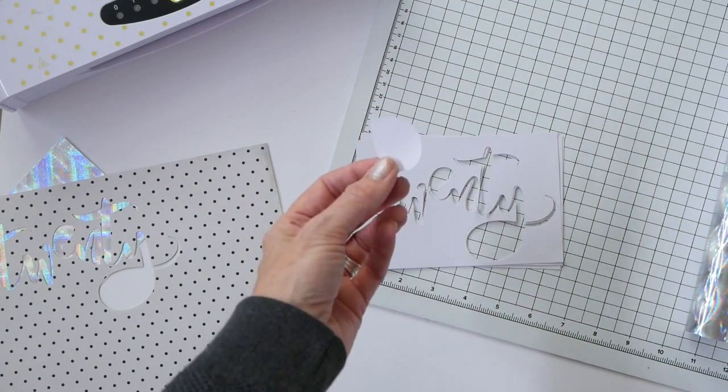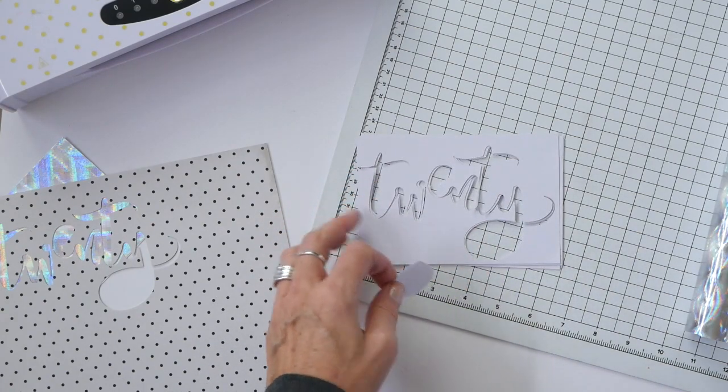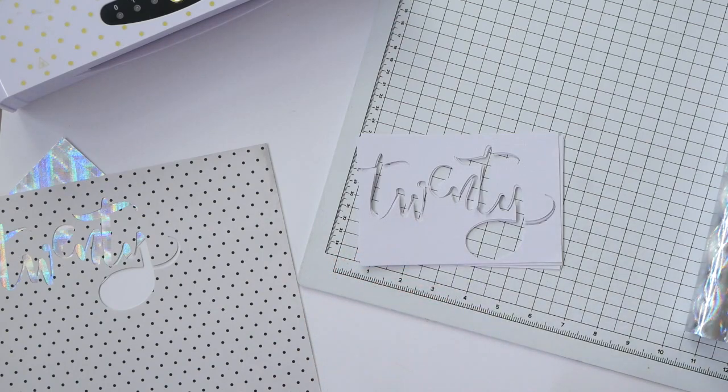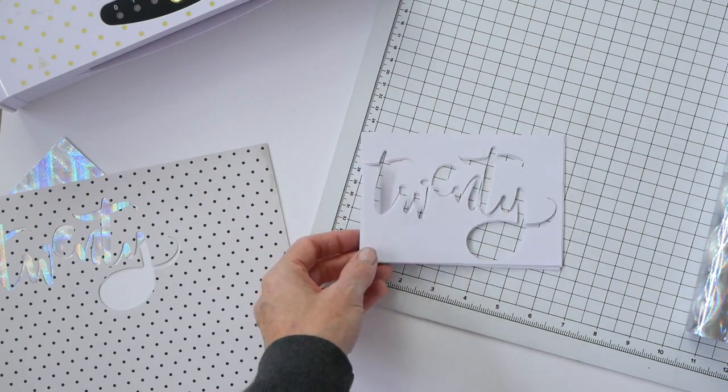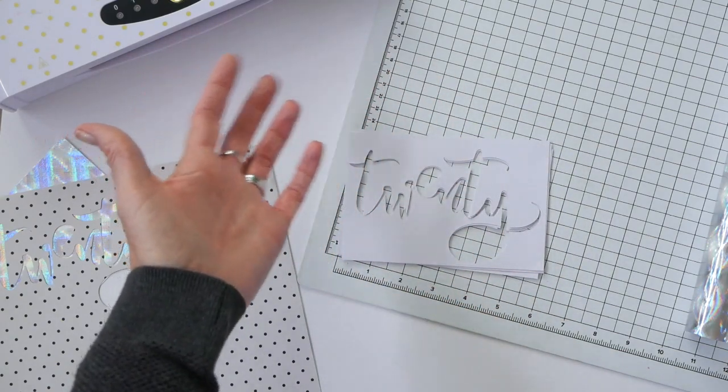What needs to happen now is that these need to be adhered together. I do have little cutouts for in between if I choose to use them, but I don't think I'm actually going to here because I think I want to put a 20 in here later on when we get done.